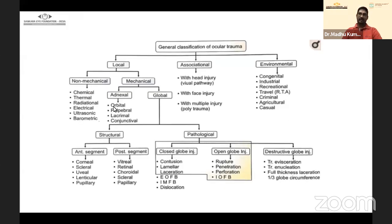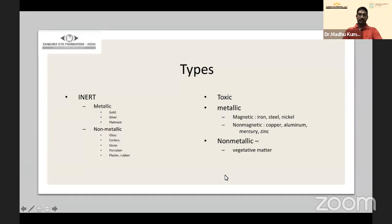The general classification of ocular trauma is wider — local (non-mechanical), mechanical, or environmental. For us, intraocular foreign body means the foreign body is lodged inside the globe. Under closed globe injury comes extraocular foreign body, and under open globe injury comes intraocular foreign body.